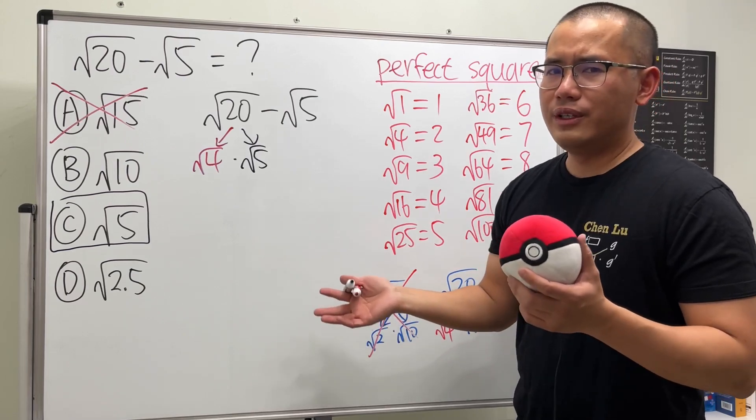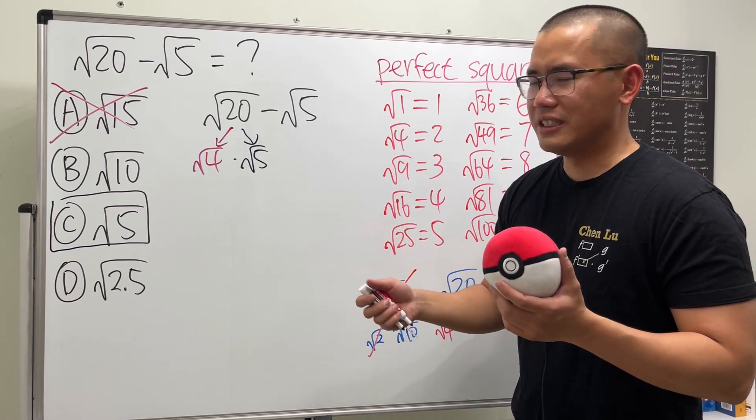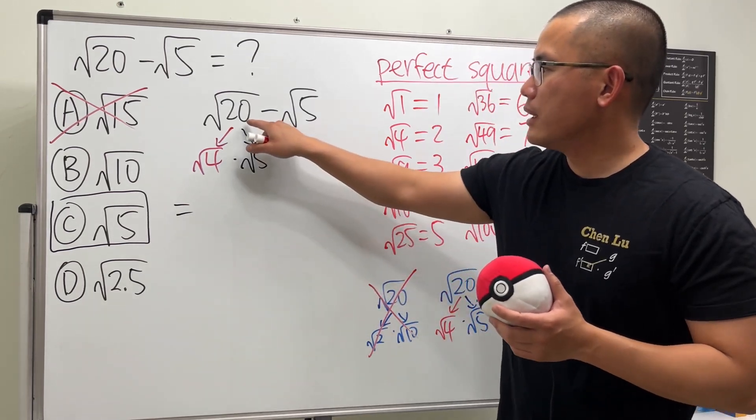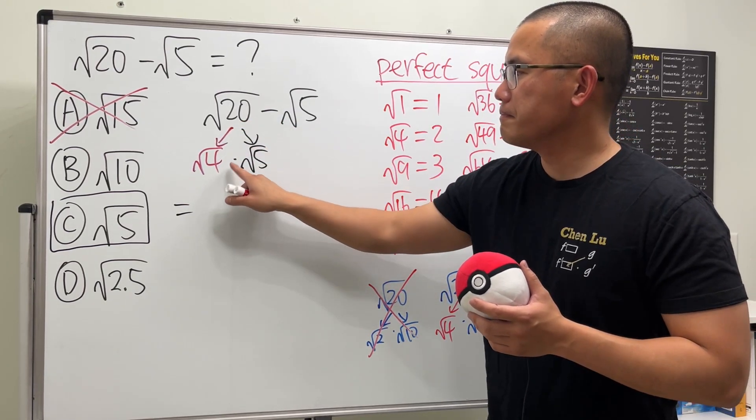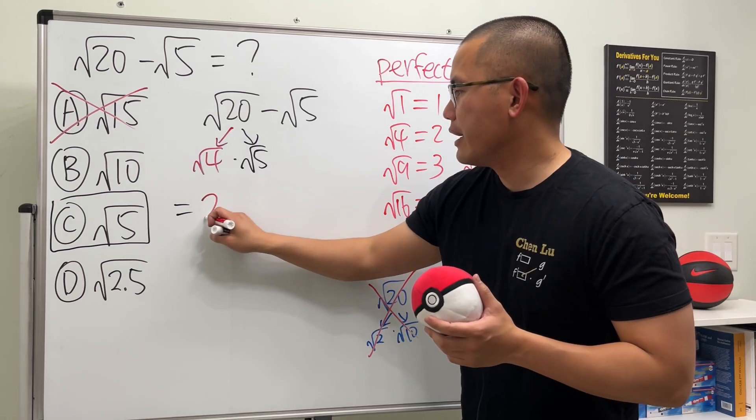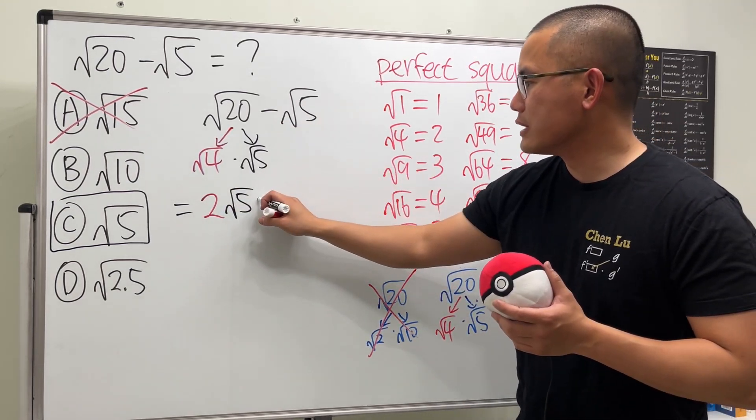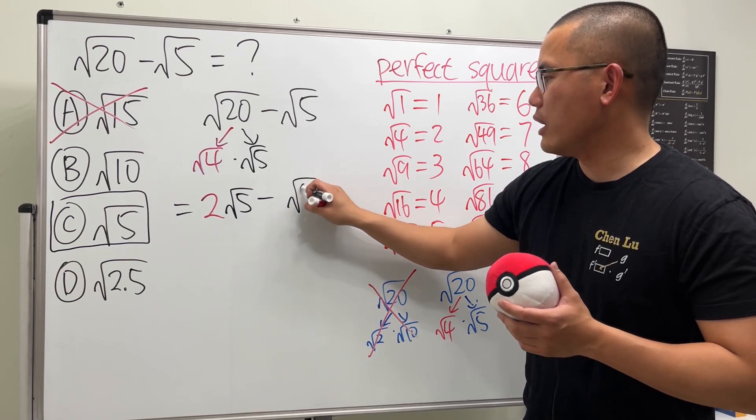And for this one, we cannot really reduce it, right? 5 is just the same as 5 times 1. Nothing too much. So, check this out. This right here is equal to this times that. This is what? Just a nice number 2. And then we multiply with square root of 5. And then we are going to subtract. Haha, square root of 5.